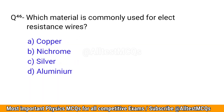Q46. Which material is commonly used for electric resistance wires? The correct option is B: Nichrome.